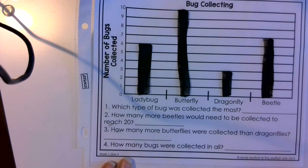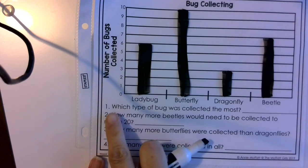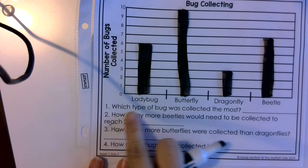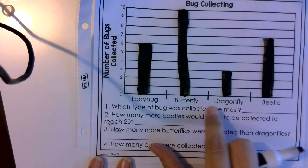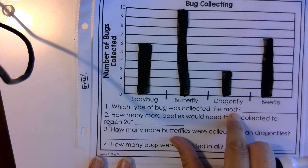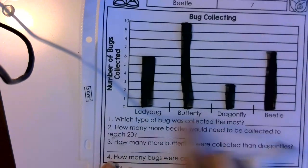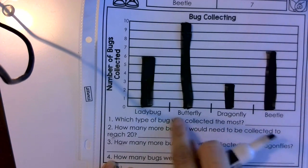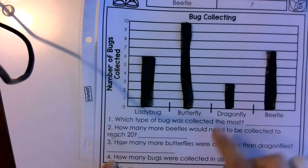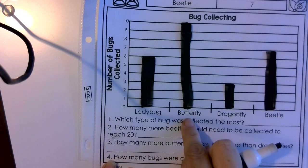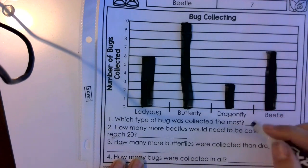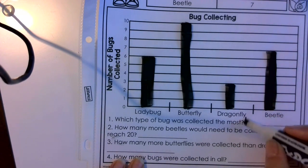Now I'm going to go down and answer some of the questions. Number one says: which type of bug was collected the most? So when we look at our graph, which one has the most amount collected? We're looking at the butterfly, and we remember that went to the 10. So here you're going to put butterfly.